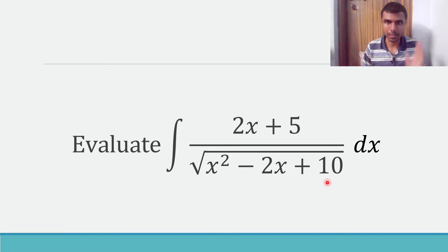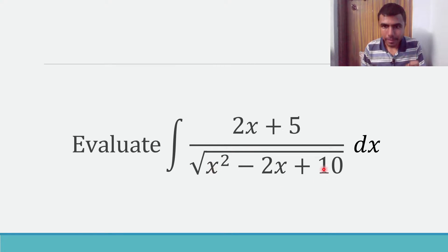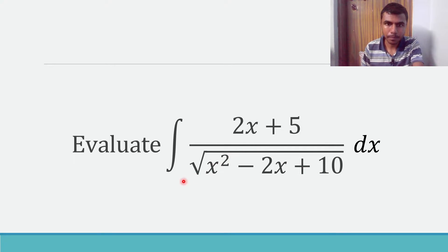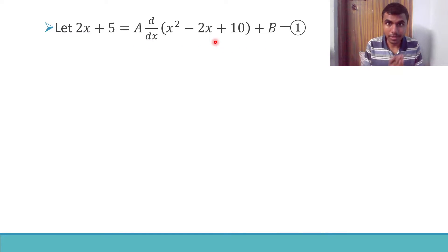Whenever you are given such a question, the first step is to write the numerator as the derivative of the quadratic expression plus something. So we let 2x + 5 equal to A times the derivative of (x² - 2x + 10) plus B. This is the method we use to solve this type of integral.